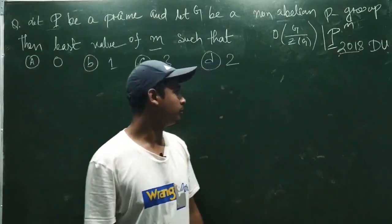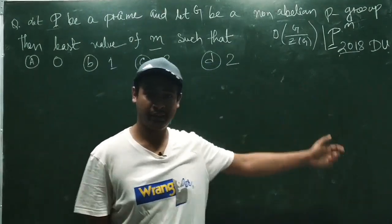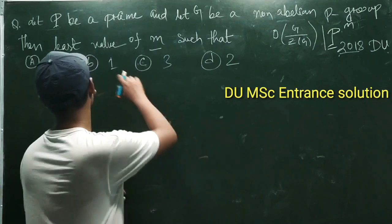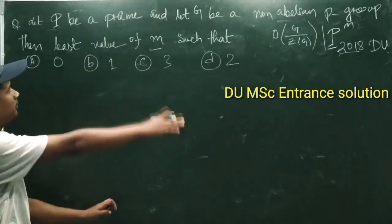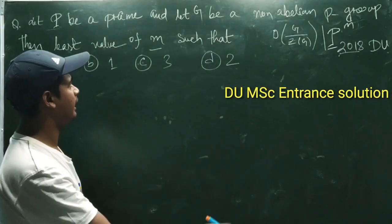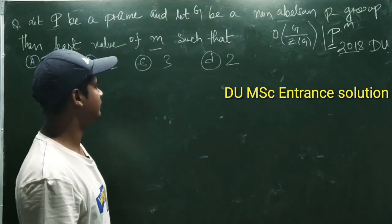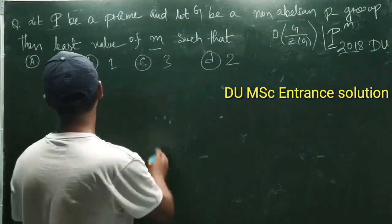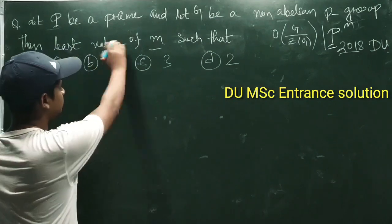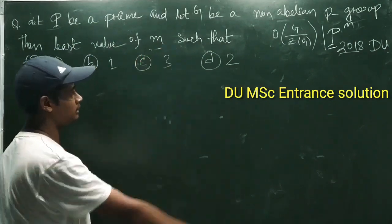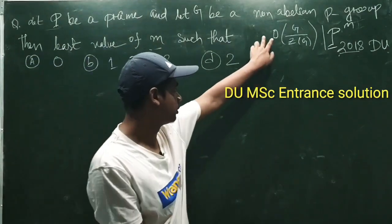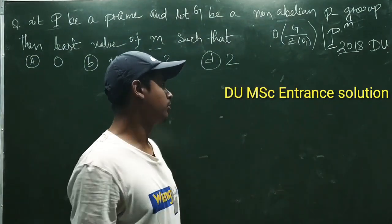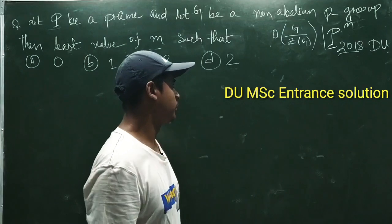Hello everyone. From the 2018 Delhi University entrance exam: let P be a prime and let Z be a non-abelian P-group. Then find the least value of M such that the order of Z by Z(Z) is divisible by P to the power M.